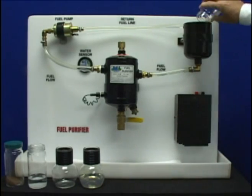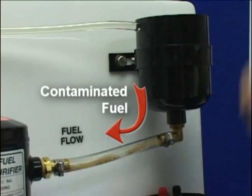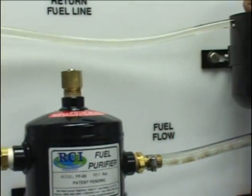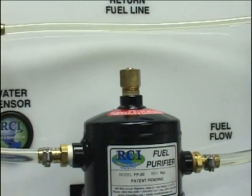As you can see, the water and contaminated fuel is coming down the fuel line into the RCI Technologies fuel purifier where it is being separated.